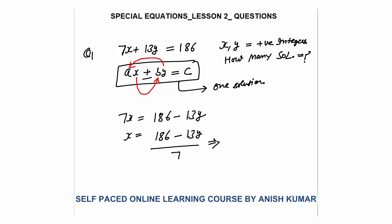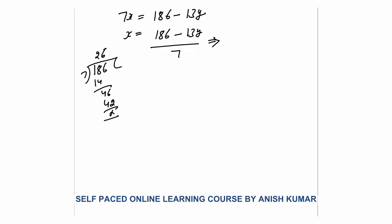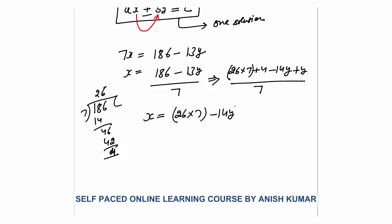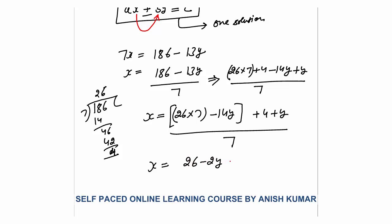Now divide until it is divisible. 7 into 14 — if you divide 186, it is divisible till 26. 7 into 26 plus remainder 4. So I can write 186 as 26 into 7 plus 4. Similarly, 13y I can write as minus 14y plus y because 14y is divisible by 7. So this is divided by 7. Combining, this equals 26 minus 2y plus (4 plus y) divided by 7.